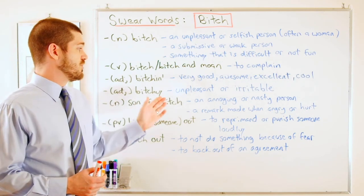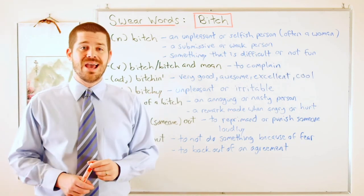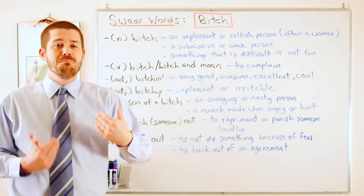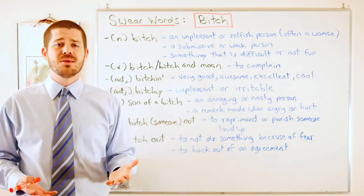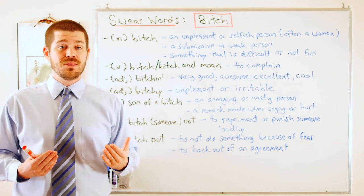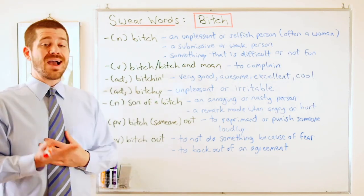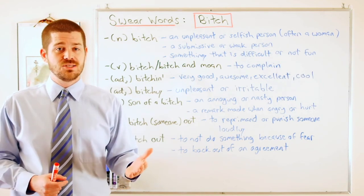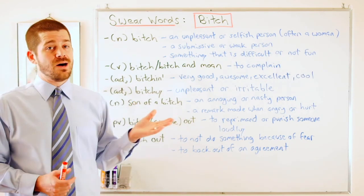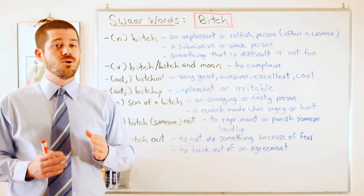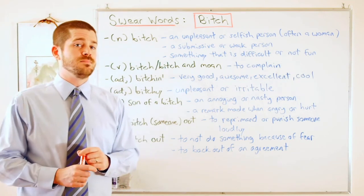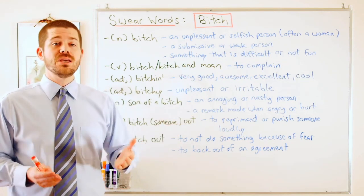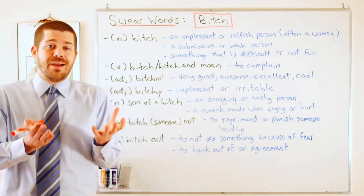The next usage is as a noun: 'son of a bitch.' The first definition is an annoying or nasty person. Imagine there's a guy who's always really mean to me — maybe he stole something from me or said something bad about me. I might say 'that guy is a real son of a bitch' or 'he's a son of a bitch.' Again, that's an insult — not a nice thing to say, so be careful.